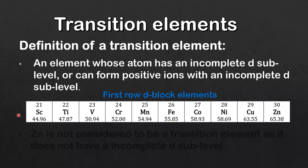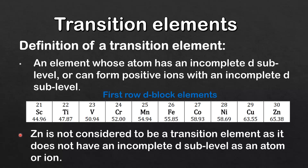Out of all the D block elements, scandium, titanium, vanadium, chromium, manganese, iron, cobalt, nickel, and copper are considered to be transition elements. Zinc is not considered to be a transition element.